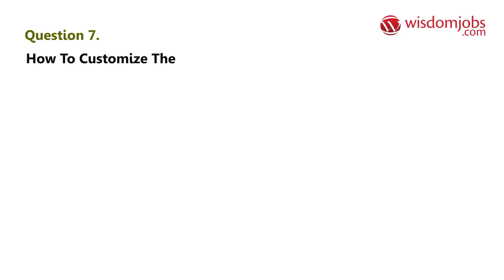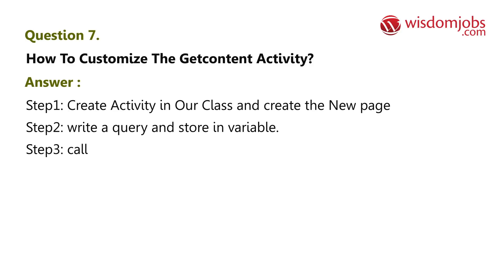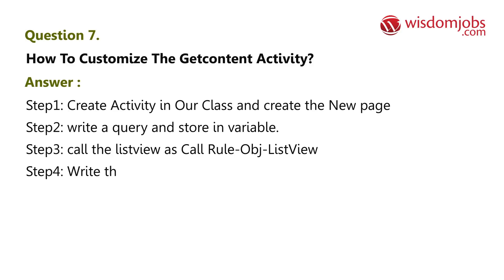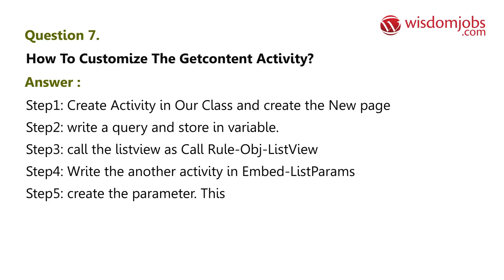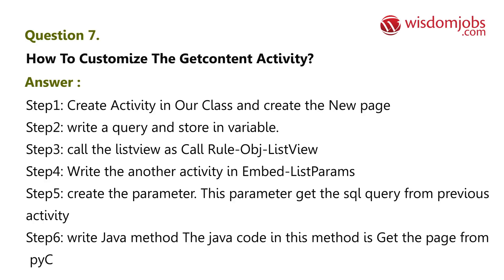Question 7: How to customize the get content activity? Answer: Step 1 — Create an activity in your class and create a new page. Step 2 — Write a query and store it in a variable. Step 3 — Call the list view using call rule-obj-list-view. Step 4 — Write another activity in embed list params.